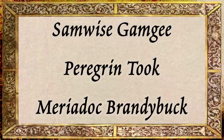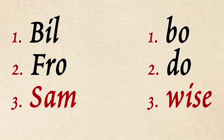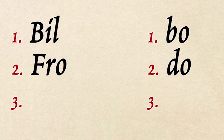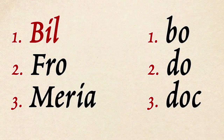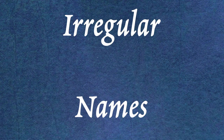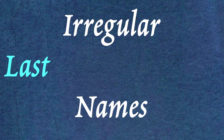For example, if we added Sam and Wise into columns one and two, we might end up generating names like Frowise or Sambo. Likewise, splitting Meriadoc would lead to awkward names like Meriabo and Bildoc. There are similar problems with Peregrin and Took. So I decided to add two extra columns to the generator — one for irregular first names and one for irregular last names.